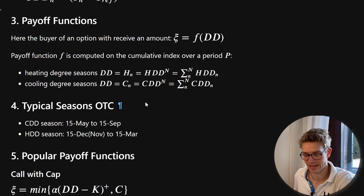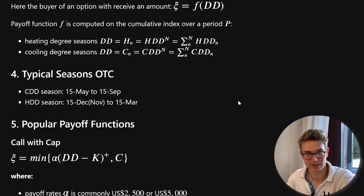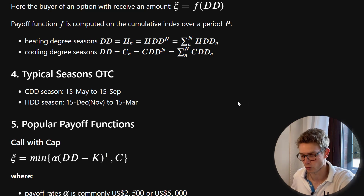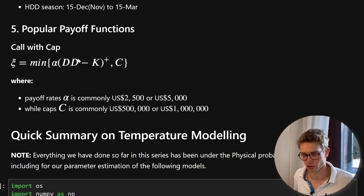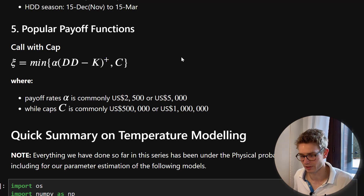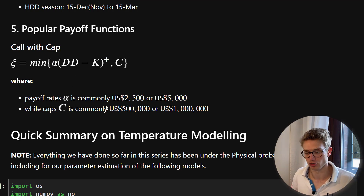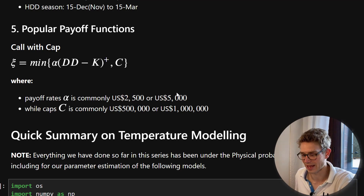The typical seasons for OTC contracts are the 15th of May to the 15th of September for cooling degree seasons, or the 15th of December to the 15th of March for heating degree seasons in the US. Popular payoff functions include a call with a cap: the minimum between the cap or the payoff function, where the payoff has our degree days minus the strike — max of that or zero. We also have the pay rate alpha, which is the tick value per degree day, often either $2,500 or $5,000 US dollars.